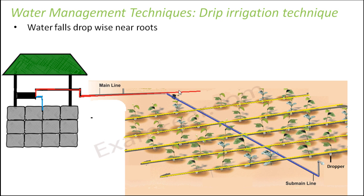You have a main line, and from the main line you have sub main lines. The red line is the main line, and from there you have sub lines in blue. From these sub lines you have a lot of droppers — one dropper is present below each plant. From this dropper, water falls drop-wise near the roots of the plants, so you are not providing any extra water.